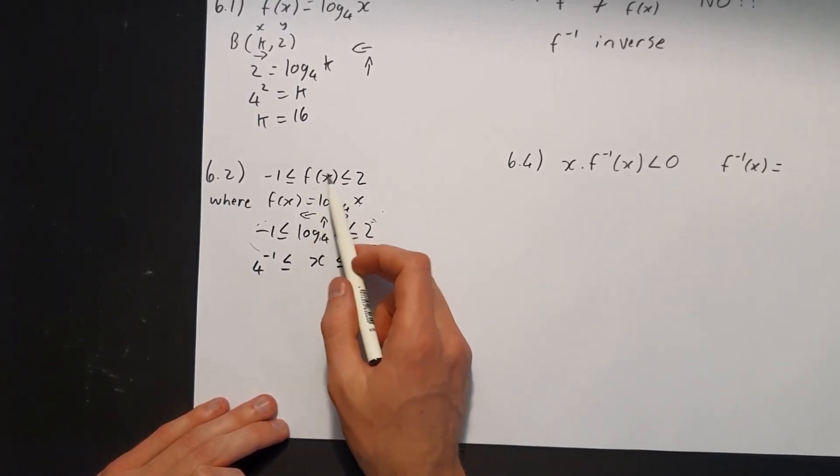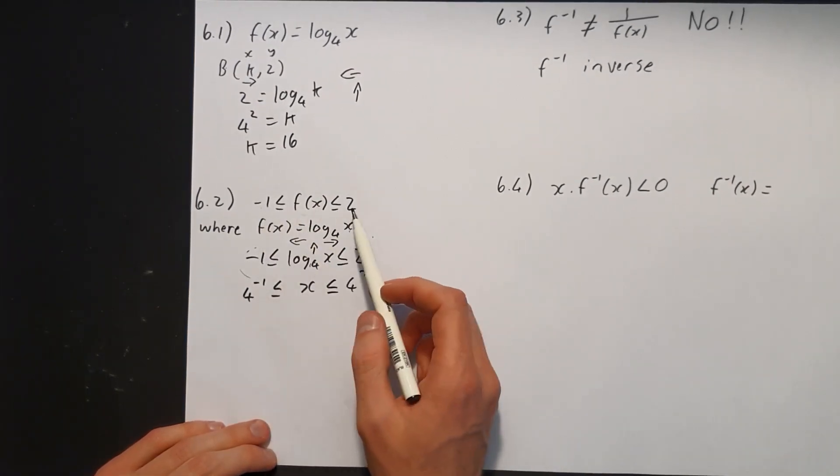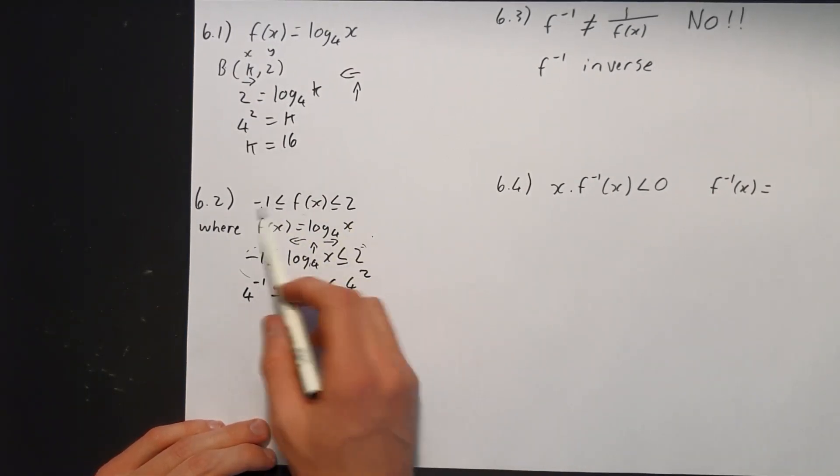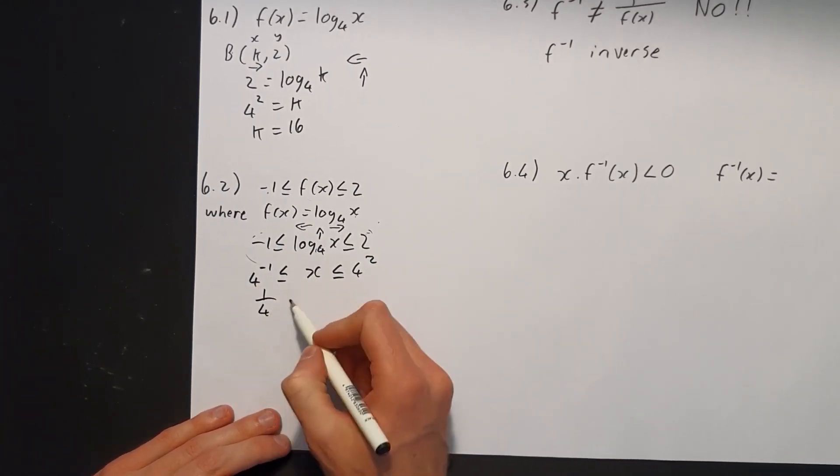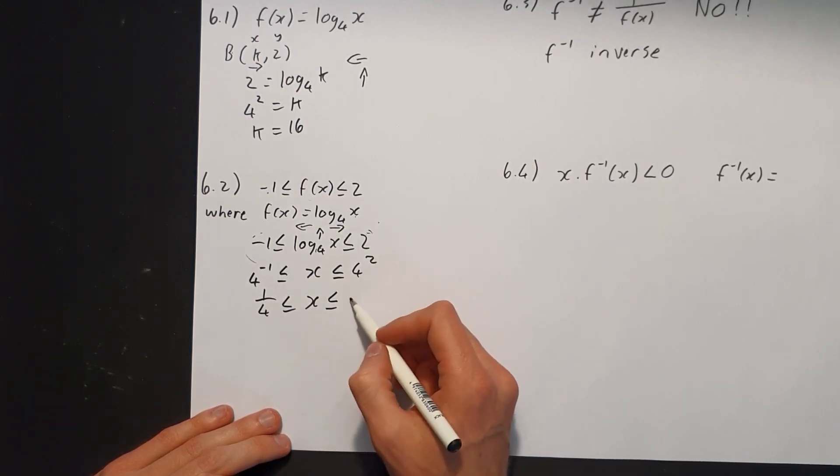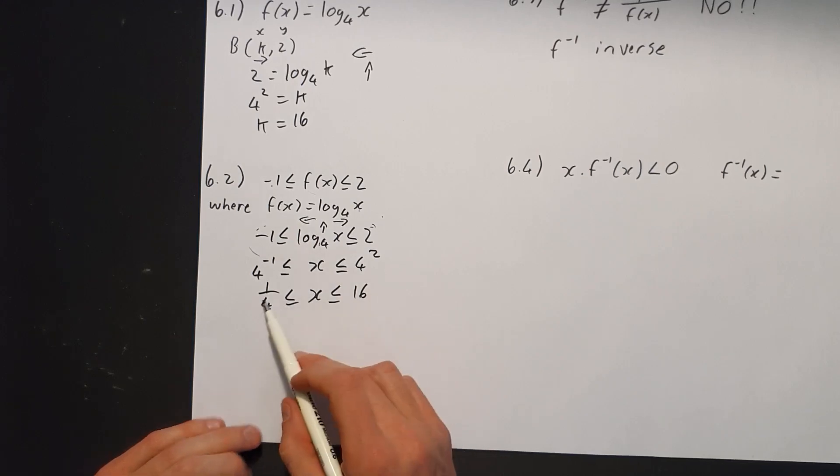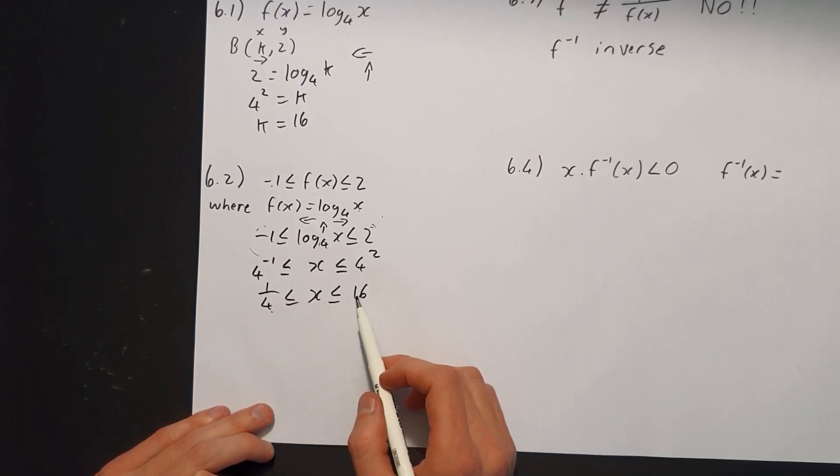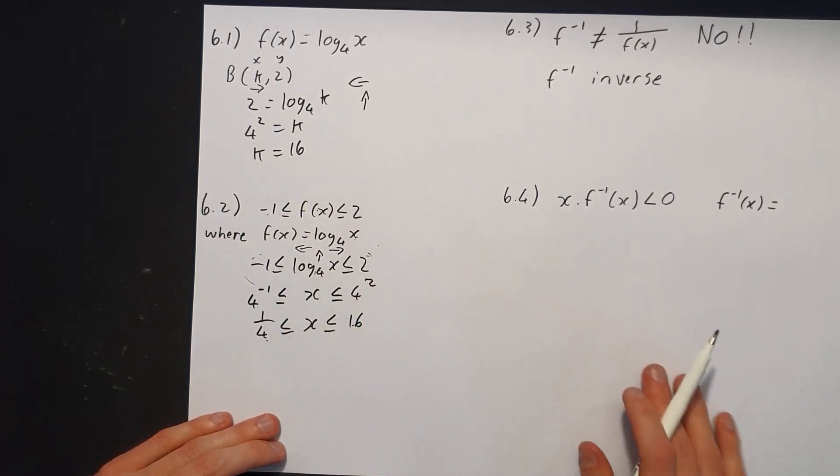It's asking for which values of x will the function lie between -1 and 2. These are output values. We can see 4⁻¹ is 1/4, and 4² is 16. So for all the x values between 1/4 and 16, we'll have all our output values of the function between -1 and 2. It's quite a big range there.